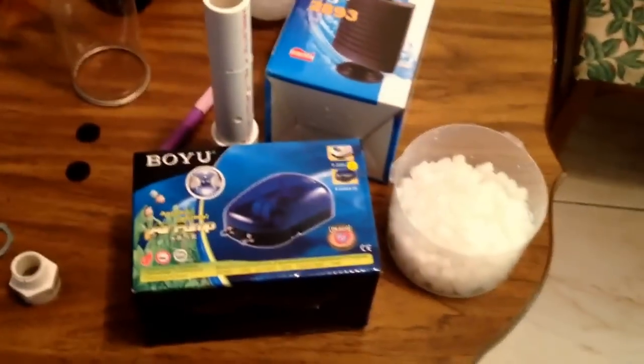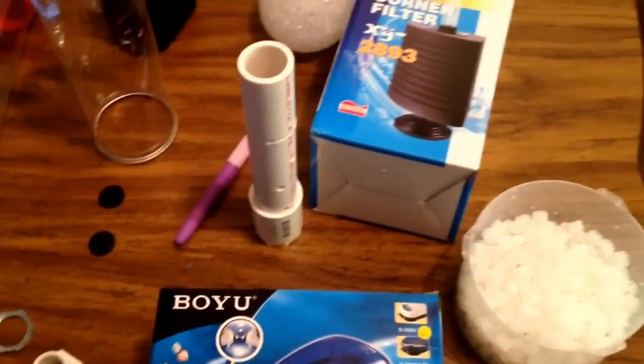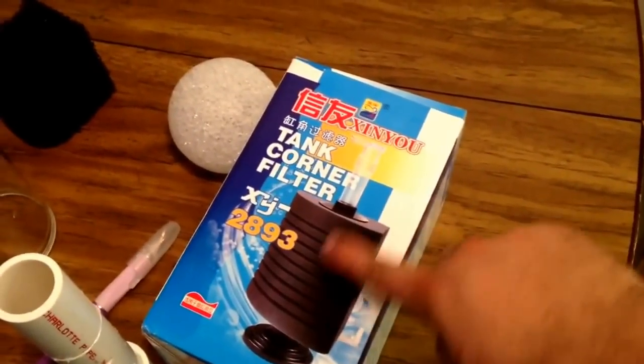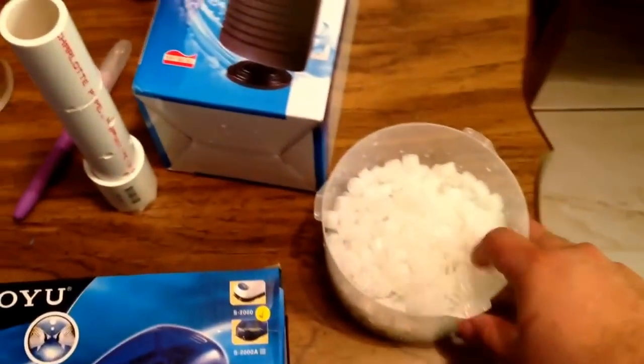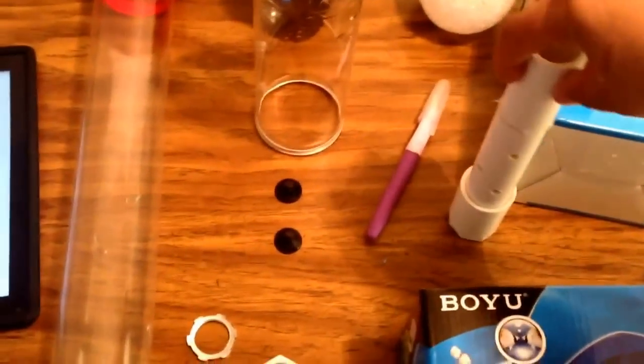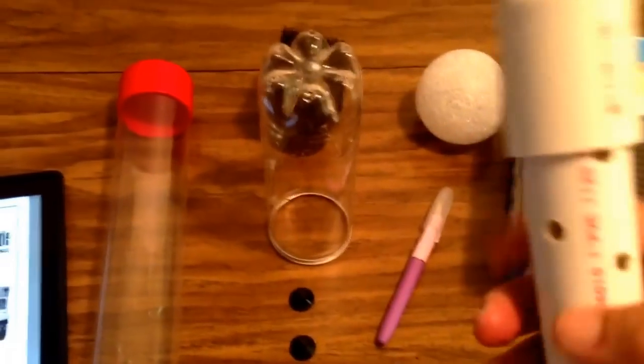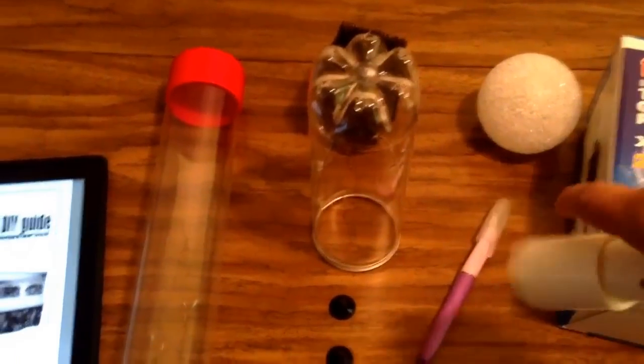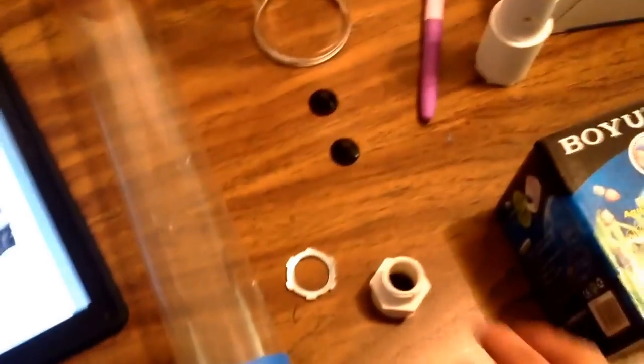This is some of the stuff that you're going to need. Very cheap stuff. You need an air pump, you probably have that already. This is a biological corner sponge, some K1 media. This is 6 inches of PVC pipe. This is a cap to the PVC pipe. X-Acto knife, two suction cups.